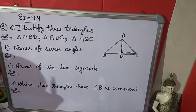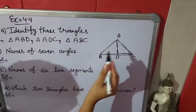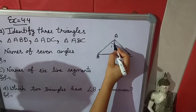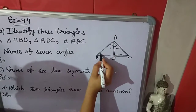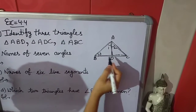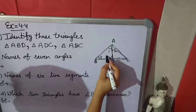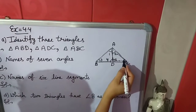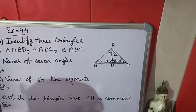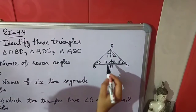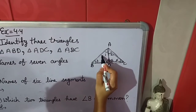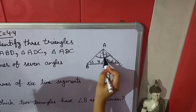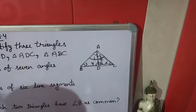Now the next question is names of seven angles. I told you about angles earlier also. So first of all we will give numbering to the angles. Angle 1, angle 2, angle 3, angle 4, angle 5, angle 6. Now angle 7 — I will take this complete angle, combining 1 and 2. That is angle 7.